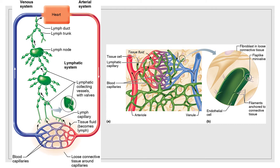In the figure on the left, lymph begins as tissue fluid derived from the blood capillaries, enters the lymph capillaries, travels through the lymphatic vessels and the lymph nodes, and enters the bloodstream via the great veins at the root of the neck. The lymphatic vessels, also called lymphatics, form a one-way system — lymph flows only towards the heart. The microscopic lymph capillaries weave between the tissue cells and blood capillaries in the loose connective tissues of the body and absorb that leaked-out fluid.